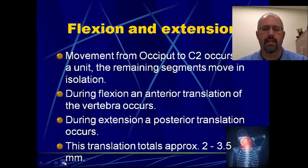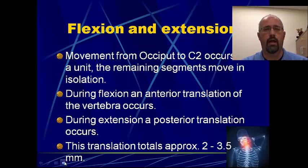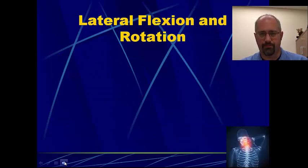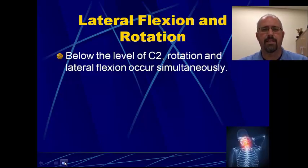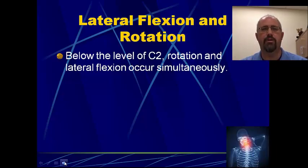The total translation is roughly between two and three millimeters, so we're not talking about a huge amount of motion. But for each subsequent amount of translation down through the vertebrae, over the total length of the neck and cervical spine, it's a considerable amount of movement. When it comes to lateral flexion and rotation below the level of C2, rotation and lateral flexion occur at the same time. So below C2 — C3, 4, 5, 6 — whenever you have lateral flexion, you have rotation at the same time. They're not separate at all.